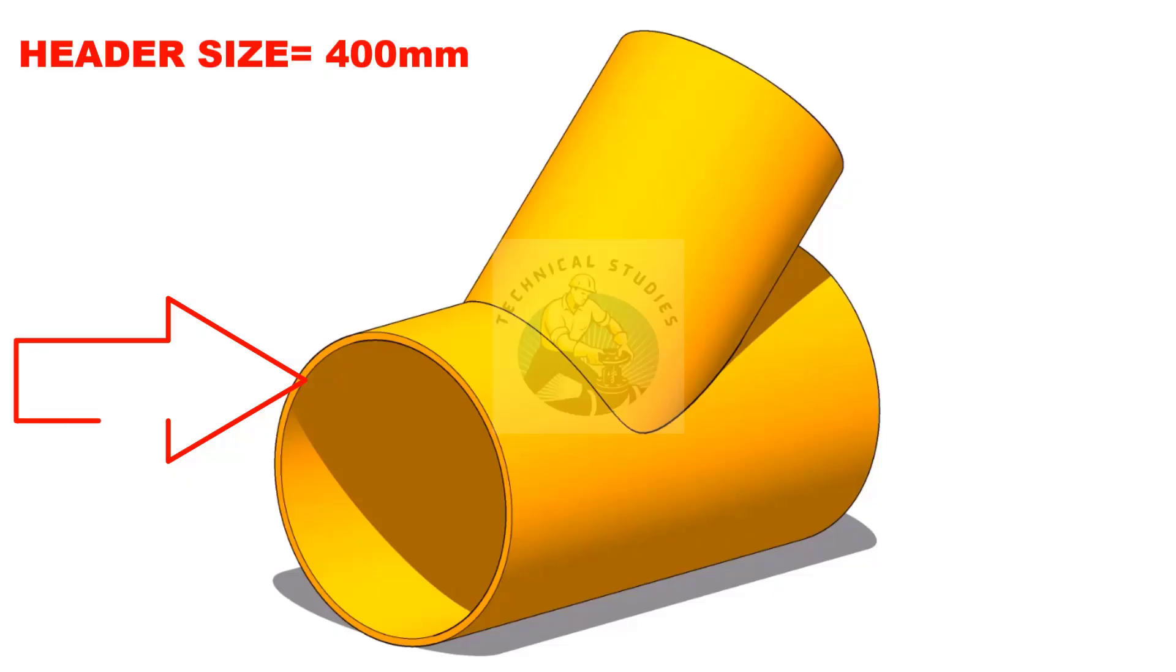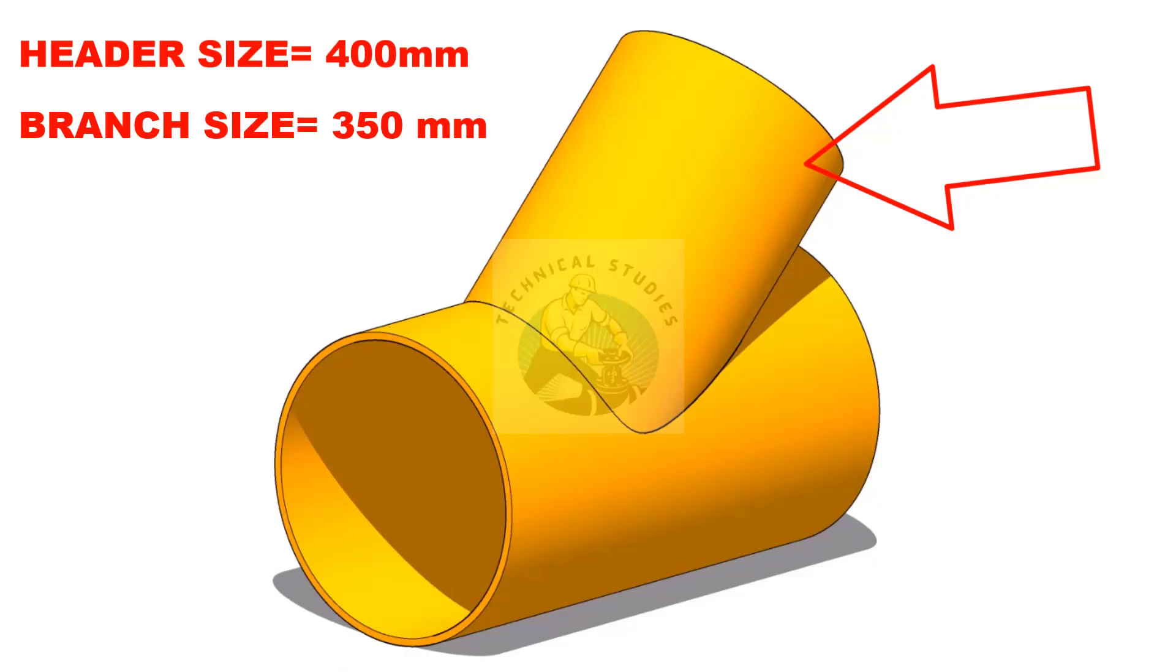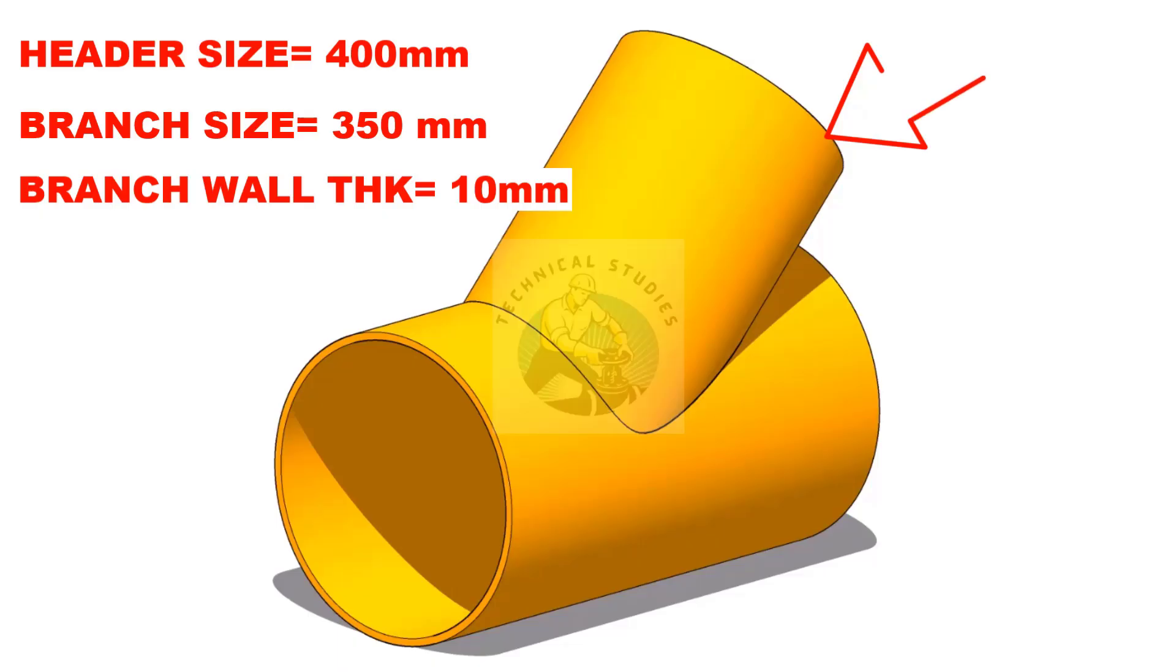In this example the header size is 400 mm and the branch size is 350 mm. The thickness of the branch is 10 mm.